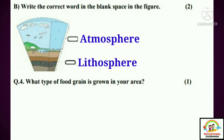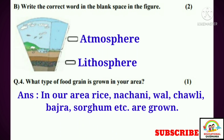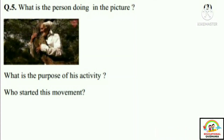Question four: What type of food grains are grown in your area? Answer: In our area, rice, natsani, wal, saouli, bazra, sorghum, etc. are grown.